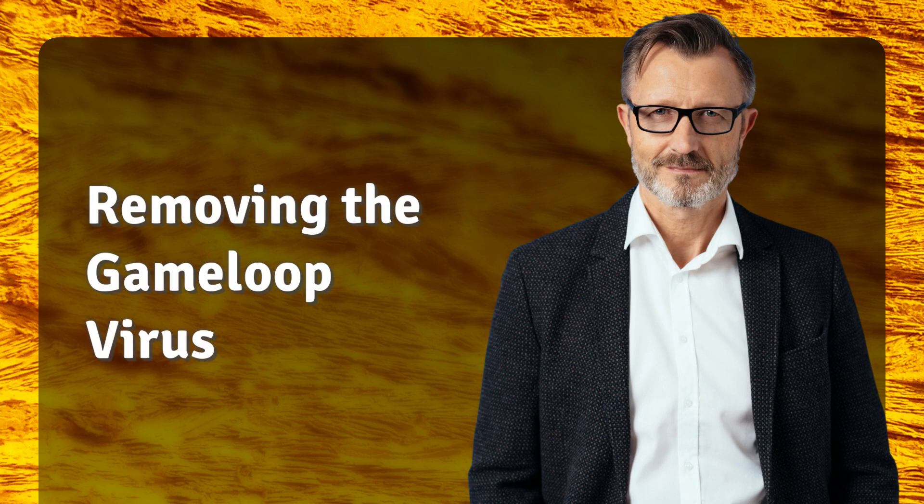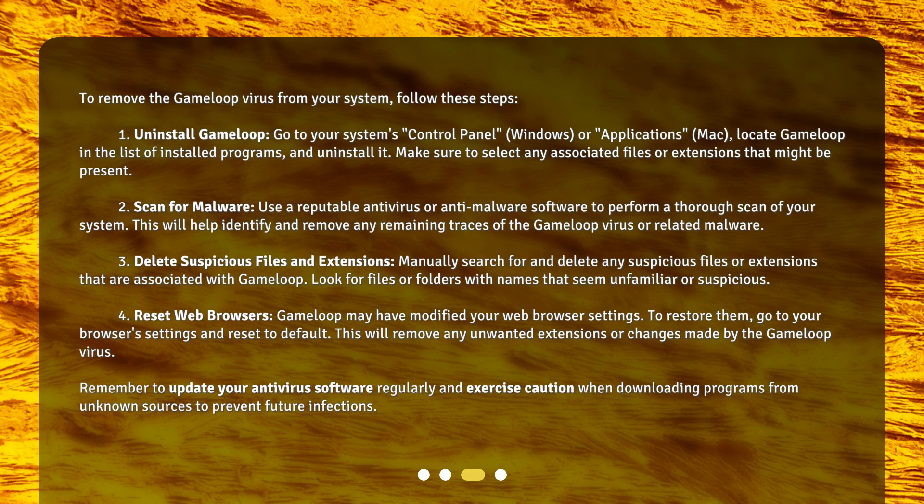To remove the GameLoop virus from your system, follow these steps. First, uninstall GameLoop. Go to your system's Control Panel on Windows, or Applications on Mac. Locate GameLoop in the list of installed programs and uninstall it. Make sure to select any associated files or extensions that might be present.